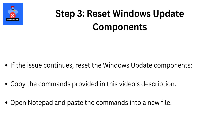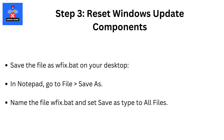Copy the commands provided in this video's description. Open Notepad and paste the commands into a new file. Save the file as WFIX.BAT on your desktop. In Notepad, go to File, then Save As. Name the file WFIX.BAT and set Save as Type to All Files.